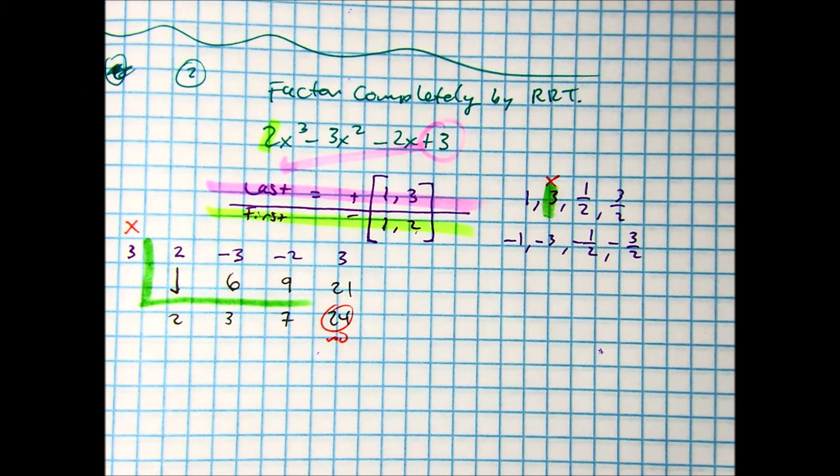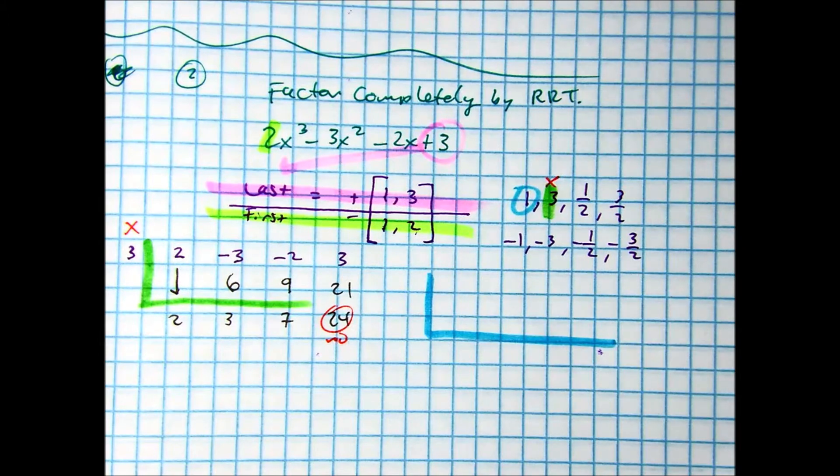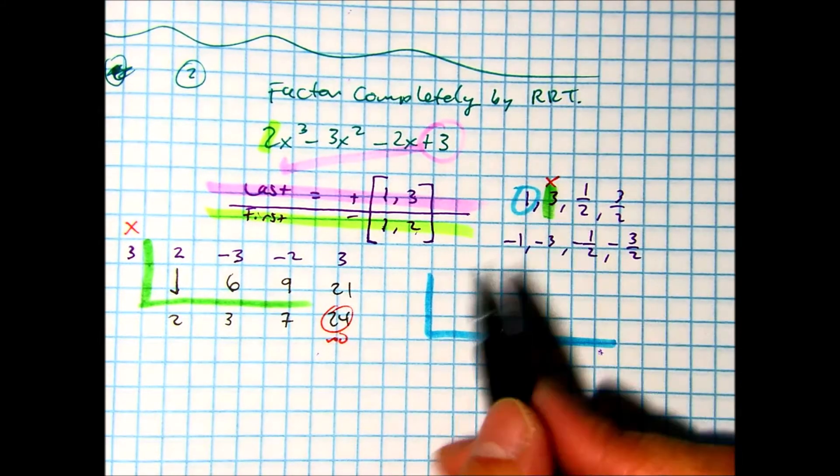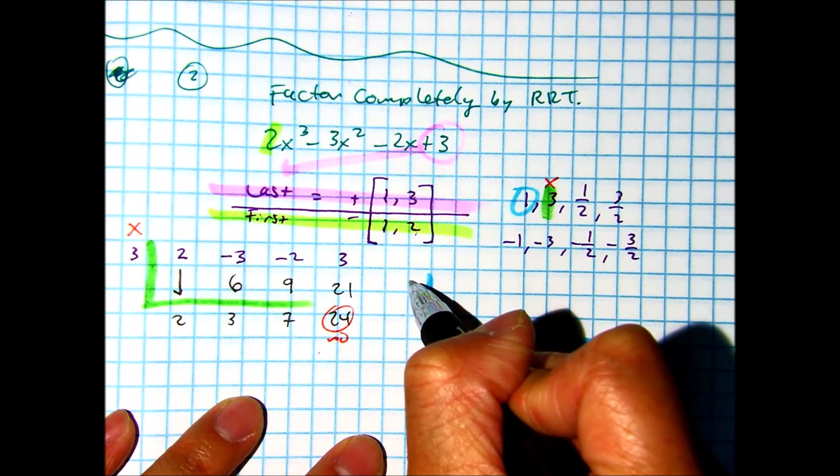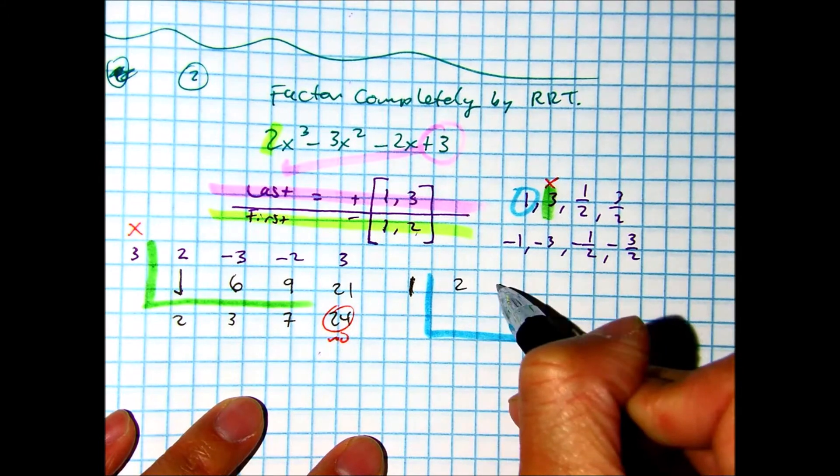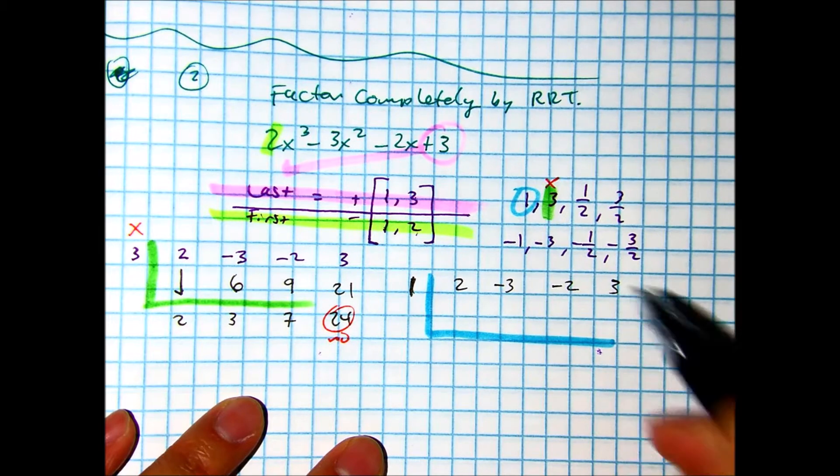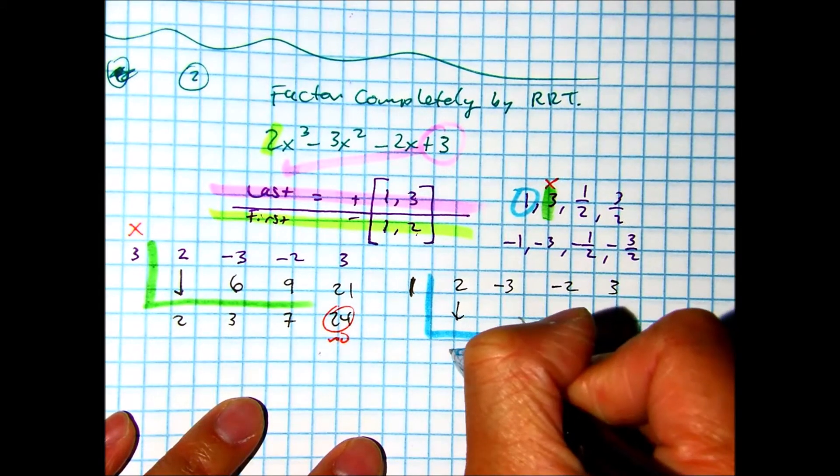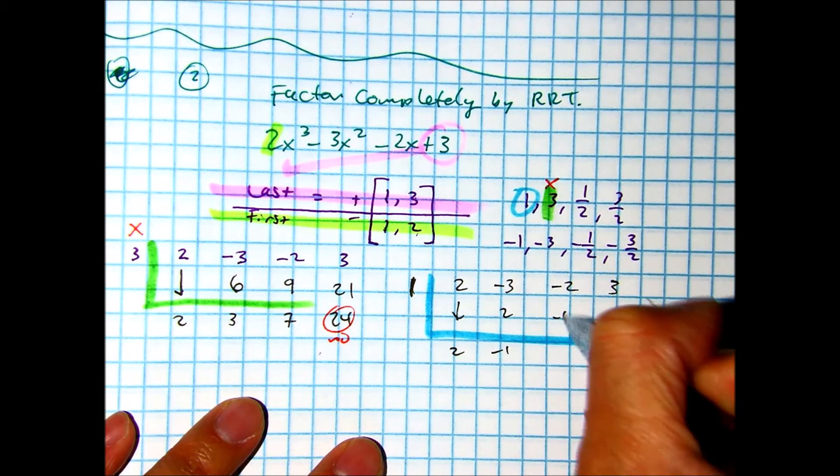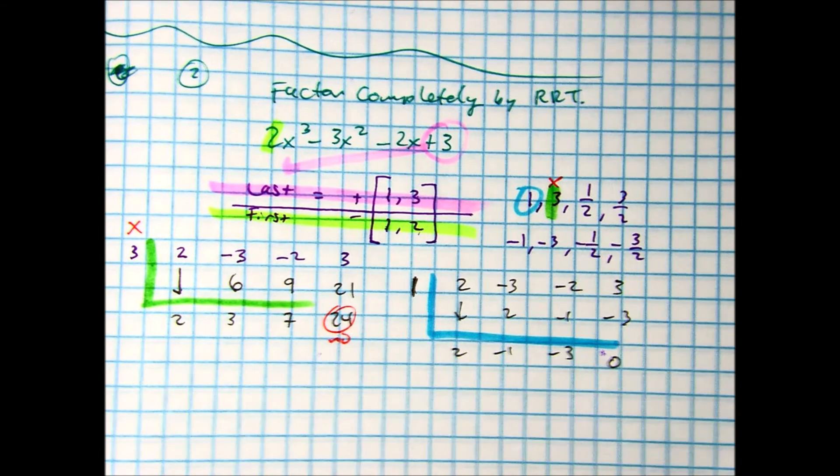Mary Grace, do you want to pick another number? One? Yes, let's test one. Mary Grace, tell me what numbers are right there. I'm just going to do these really quick for you. Class, is this a factor? Yes.